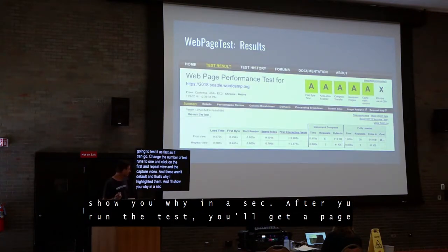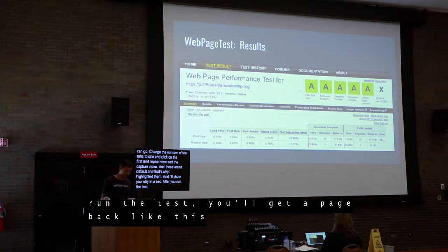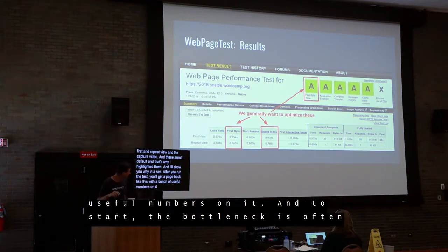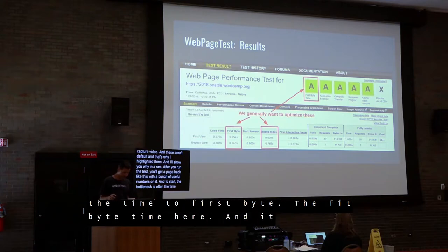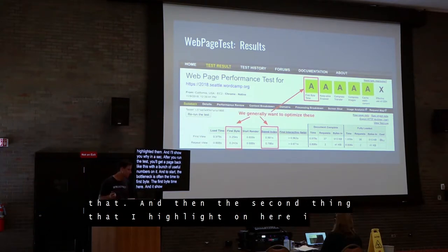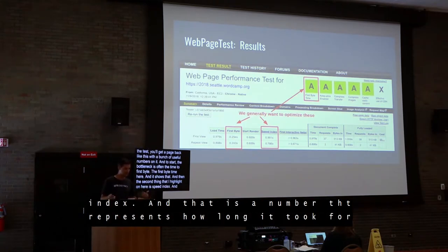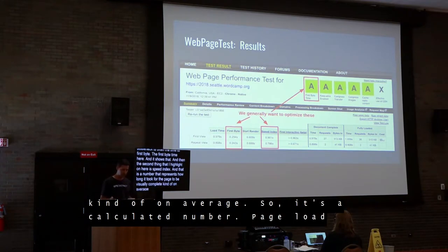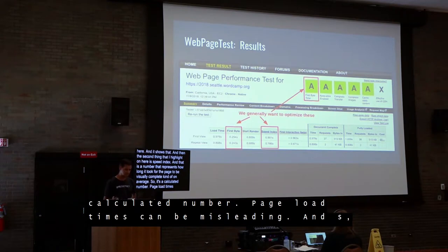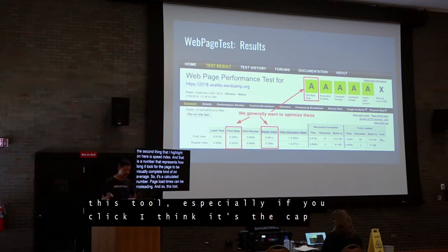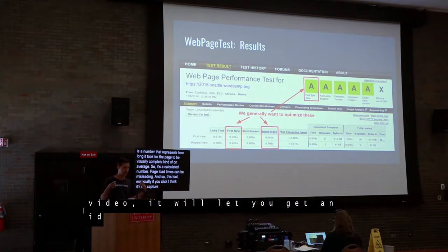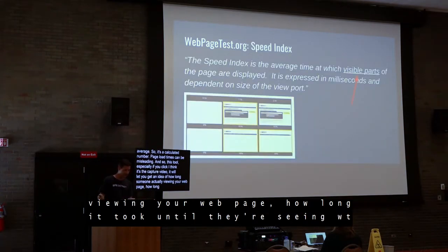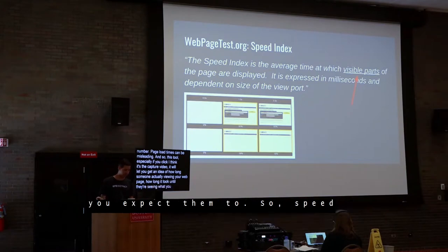After you run the test, you'll get a results page with a bunch of useful numbers. The key one to start with is time to first byte. Another important one is the Speed Index — a number that represents how long it took for the page to be visually complete, kind of on average. Page load times can be misleading, so this tool — especially if you click the capture video option — lets you get an idea of how long someone viewing your page actually waited until they're seeing what you expect.